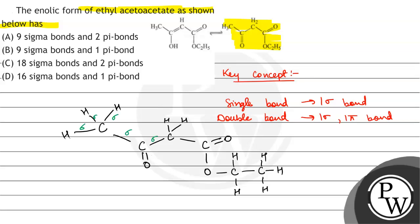2, 3, 4, 5, 6, 7, 8, 9, 10, 11, 12, 13, 14, 15, 16, 17, 18 sigma bonds.